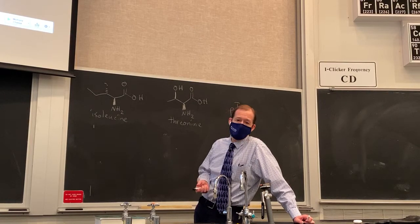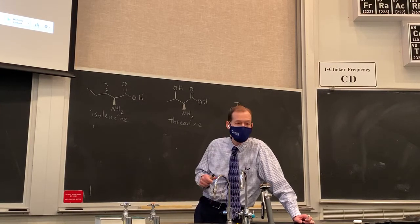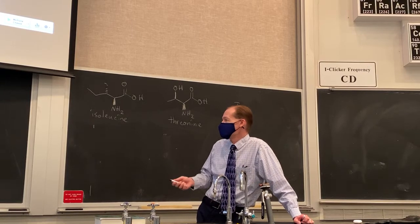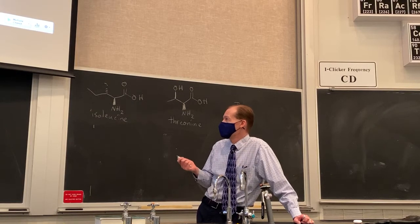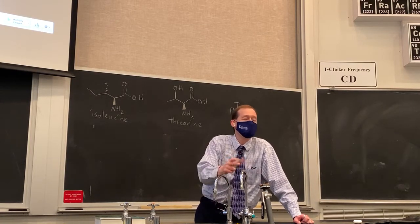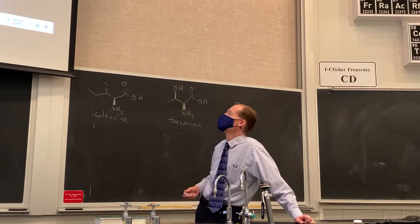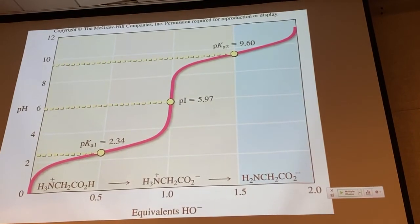Adding one and a half equivalents gives a 1:1 mixture of zwitterion and conjugate base. By Henderson-Hasselbalch, the pH at that point equals the pKa of the ammonium ion — 9.6 for glycine, close to 9.5 for most amino acids, but below ammonia's 9.8. At two equivalents of base, we have essentially all conjugate base. The key skill is predicting which form of an amino acid dominates at a given pH.